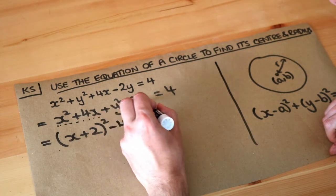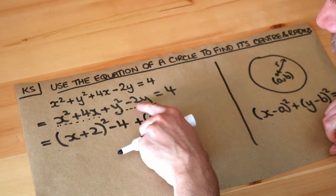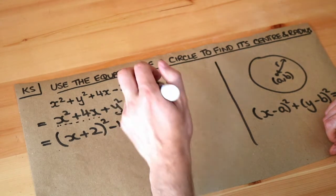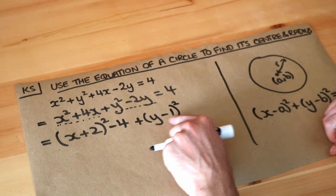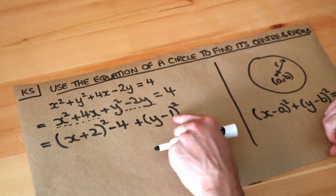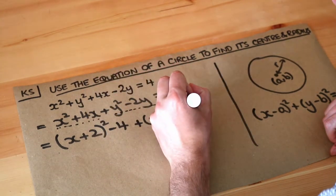We're going to do the same for the y's as well. So we've got y and then what's half of the number in front of the y? What's half of minus 2? It's minus 1. That's squared. And then again you think, well if I expanded this that would give you y squared minus 2y and we'd also have plus 1. We don't want the plus 1 so we throw it away.